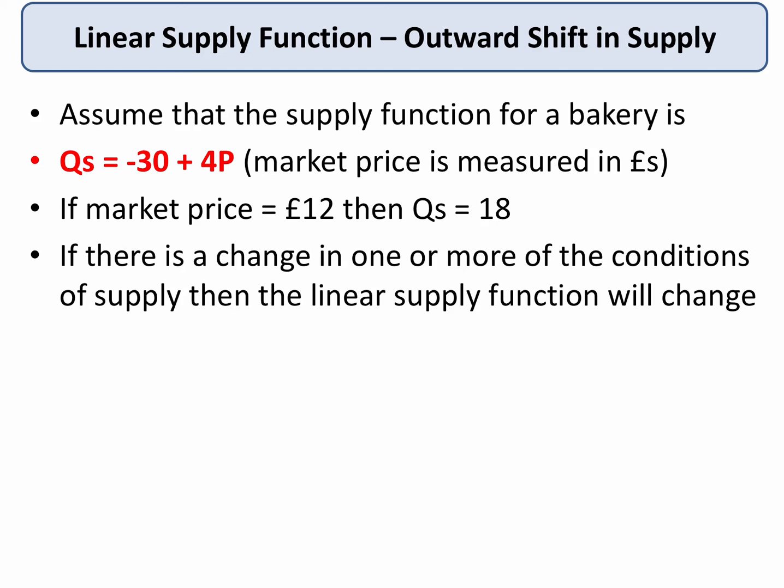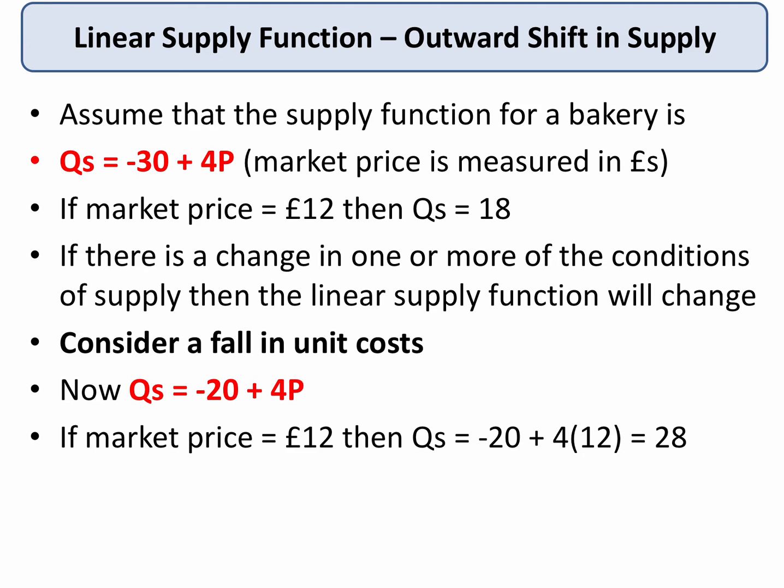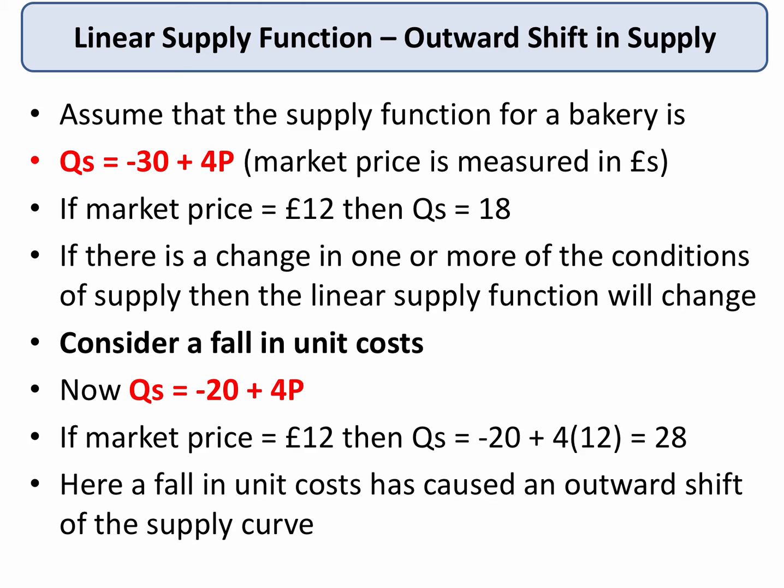However, if there's a change in one of the conditions of supply, the linear supply function will change. Consider a fall in unit costs — for example, a decrease in the price of wheat used in making loaves. Now quantity supplied is minus 20 plus 4P. It takes a lower price for the bakery to supply. Keeping the market price at £12, quantity supplied becomes minus 20 plus 48, which equals 28. A fall in the price of wheat has caused supply to increase from 18 to 28 even if the price remains the same — there is more supply at each price.